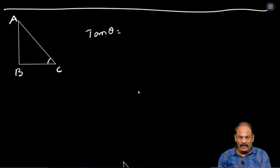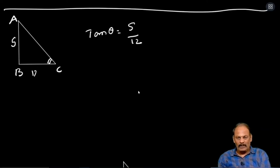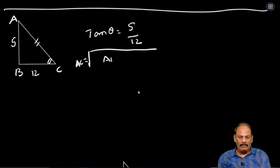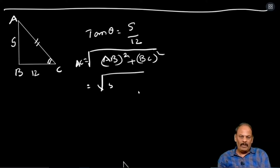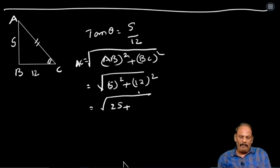One more sum: tan theta equal to 5 by 12. When theta is here, AB is the opposite side (5) and BC is the adjacent side (12). We need to find the hypotenuse value using the right angle triangle property: AC equal to root of AB square plus BC square, that is root of 5 square plus 12 square, root of 25 plus 144, root of 169, equal to 13.